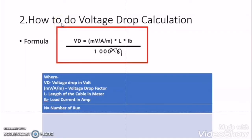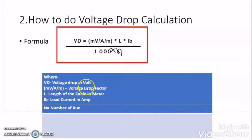So far we understand why to calculate the voltage drop and what is the importance of calculating it. Our second topic in this video is how to calculate the voltage drop. There is a formula: Voltage Drop (Vd) = Vd factor × length of cable (L) × load current (Ib) / (1000 × number of runs (N)). Vd is the voltage drop in volts. This is the voltage drop factor. L is the length of cable in meters. Ib is the load current in amperes. N is the number of runs.